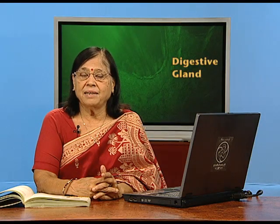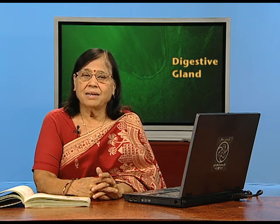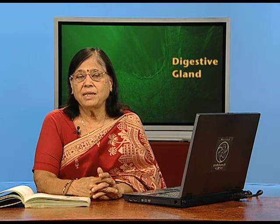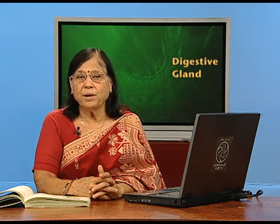Coming to the pancreas as a digestive gland: its digestive juices take care of proteins, carbohydrates, and fats. The other part of the story is the endocrine part — the islet of Langerhans — which secretes two hormones: insulin and glucagon. You are all familiar with insulin, diabetes, and sugar in the blood. If insulin is not enough, the person is diabetic and cannot handle sugar. Glucagon is also very important: if your glucose level goes very low, it stimulates hunger.